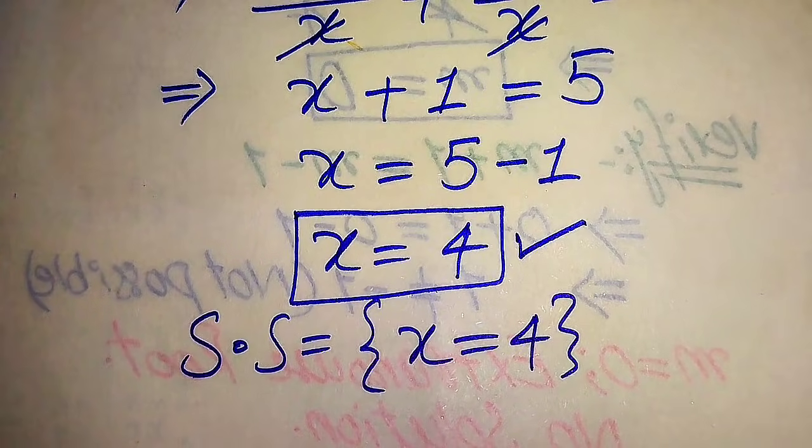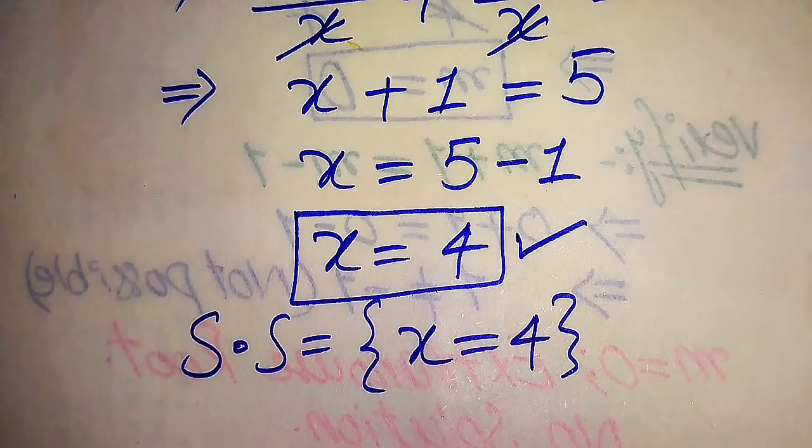In the second method we directly get x equals 4, which we already verified satisfies the original equation, so the solution set is x equals 4. This is the only solution. Thank you for watching — please subscribe to my channel for more videos.